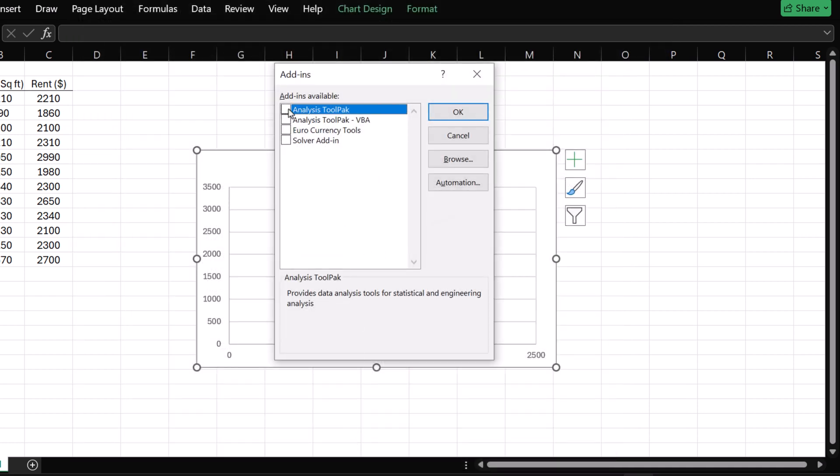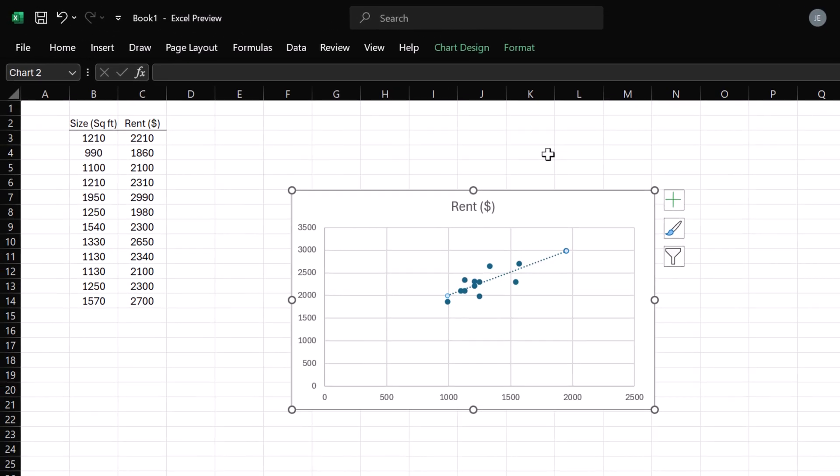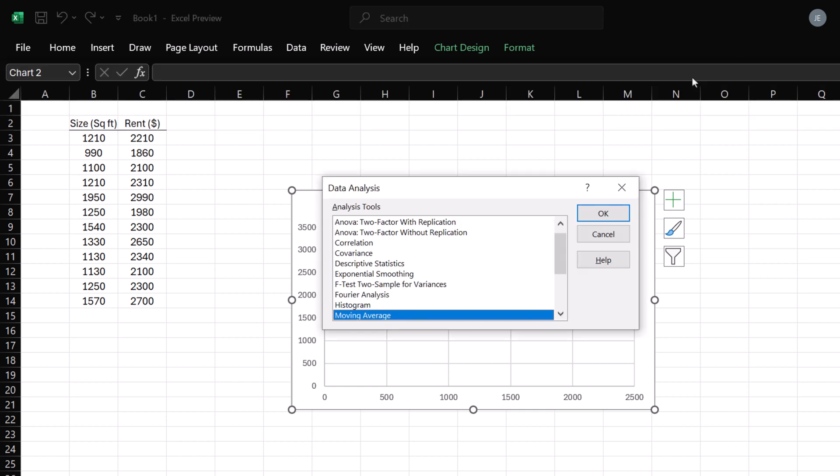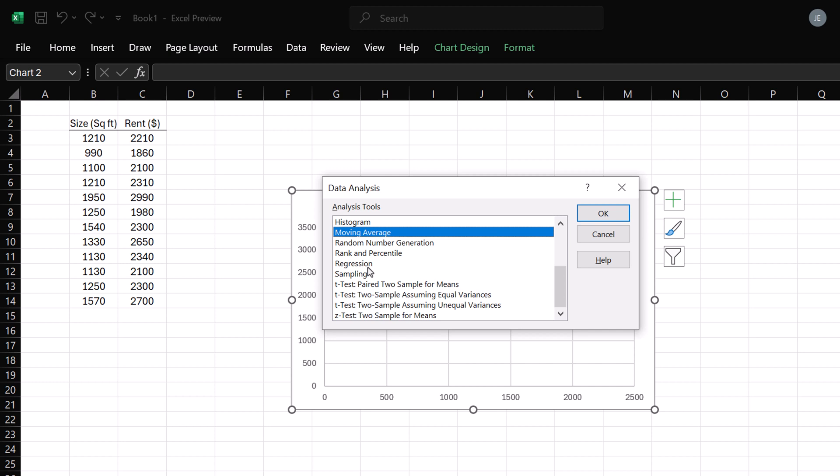Select Analysis ToolPak. Click OK. Now click the Data tab. Click Data Analysis. Scroll down and select Regression. Click OK.